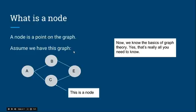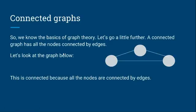So now we have the absolute basics of what graph theory is. We can move on to a little more complicated stuff. So a node is a pointer on a graph. Let's look at some connected graphs. So we know the basics. So now we know the basics of graph theory. Let's go a little further.